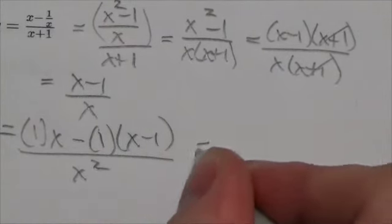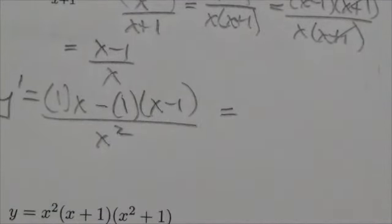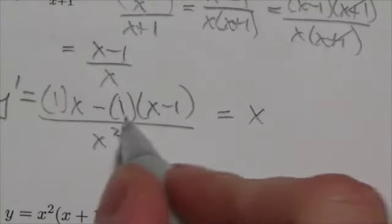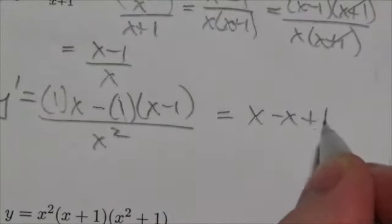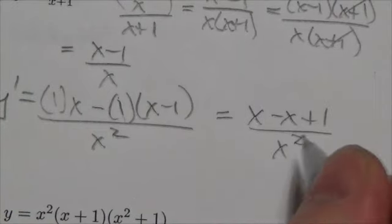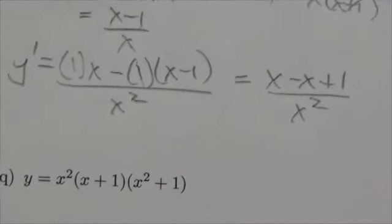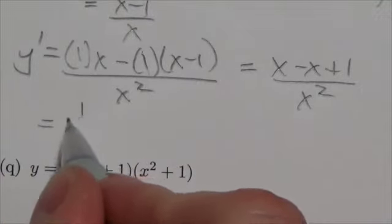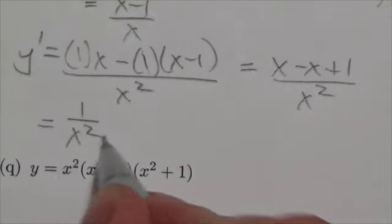Okay, and I'm going to come over here and do this because I'm scared that this is going to take up a little bit more space. This is going to end up being x minus x plus 1 over x squared. Okay, I can see that the x's are going to cancel each other out. And so this is going to be 1 over x squared.